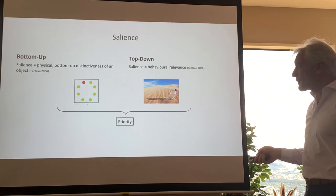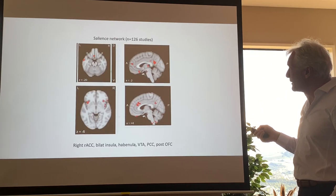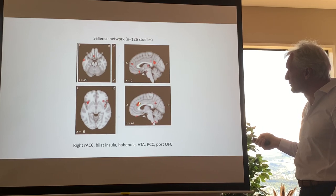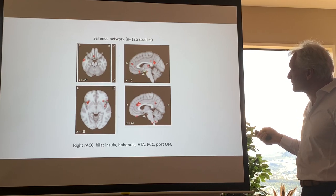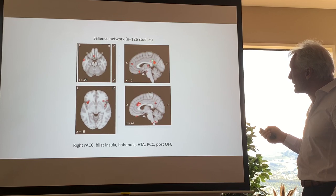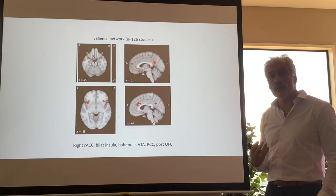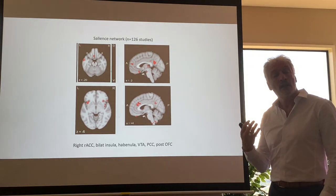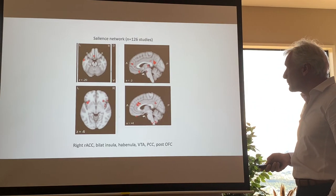The salience network involves predominantly the rostral part of the anterior cingulate and the anterior insula, but also the habenula, some orbitofrontal cortex, and the posterior cingulate. The posterior cingulate is usually not considered part of the salience network and may actually be the link between the salience network and the default mode network.